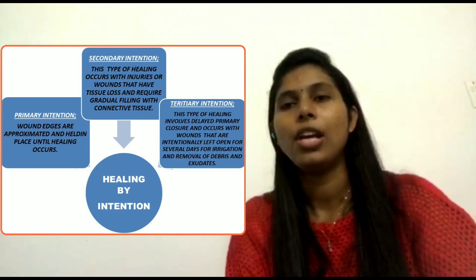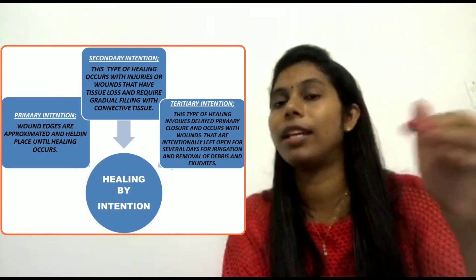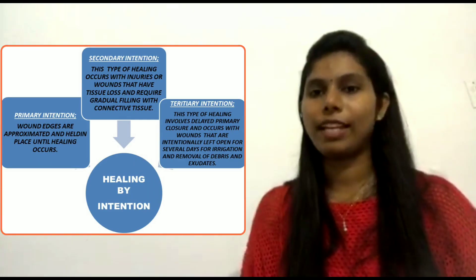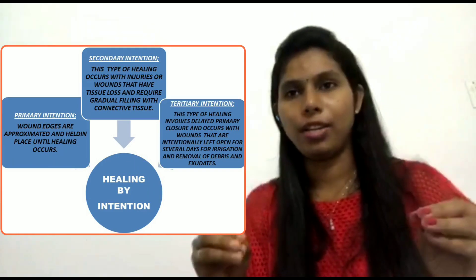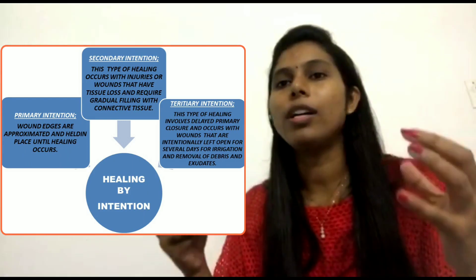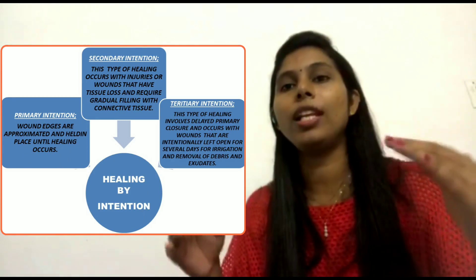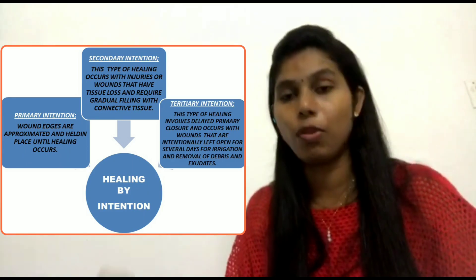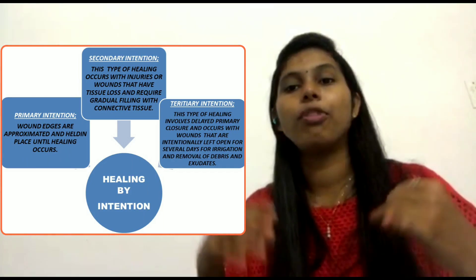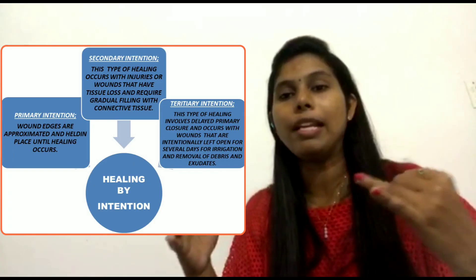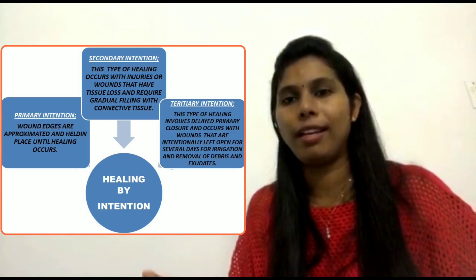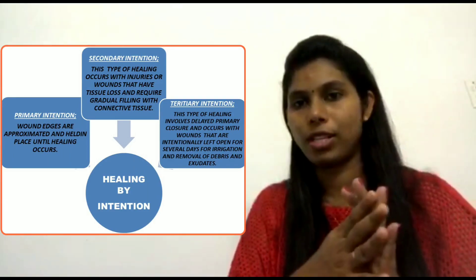What kind of wounds involve Tertiary Intention? In the Tertiary Intention, the healing involves delayed primary closure, and occurs with wounds that are intentionally left open for several days. For what purpose? It might be for irrigation, or for removal of some of the debris or slough tissues, and might be for removal of purulent drainage and exudates. So we have to remove those first.